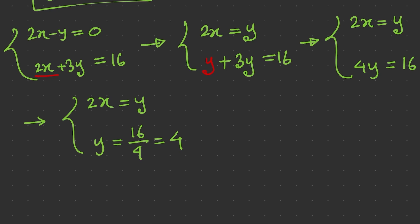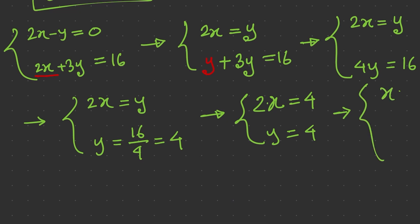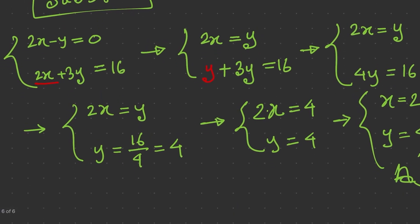Now we substitute y equals 4 back into equation 1: 2x equals 4, so x equals 2. Our solution is x equals 2 and y equals 4. In the substitution method, we solve one equation for a variable and substitute into the second equation to find the solution.